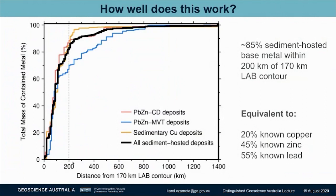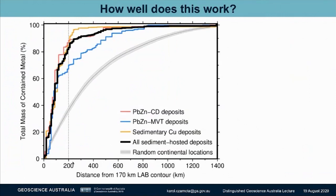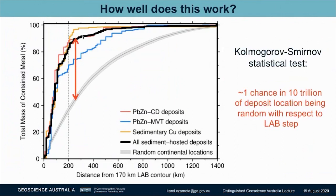So how well does this work? If we look at the global statistics, we can plot the amount of metal in deposits as a function of distance from the 170-kilometre contour. There are different types of sedimentary-hosted deposits — that's what the different coloured lines communicate. The black line is the agglomeration of all of these together, and it says we find over 85% of these metals within 200 kilometres of the boundary. There are no giants which sit away from this particular contour. Mark seeded random distributions of these deposits across the entire world, which provides the gray line. A Kolmogorov-Smirnov statistical test found that there is only one chance in 10 trillion that the black line has been drawn from the random distribution. In other words, there is only one chance in 10 trillion that what we are seeing is random — I think we should pay attention to what we've discovered.